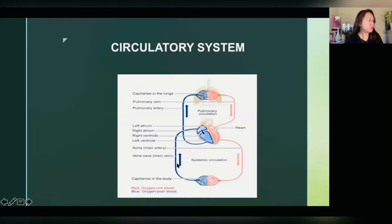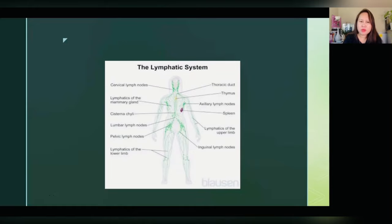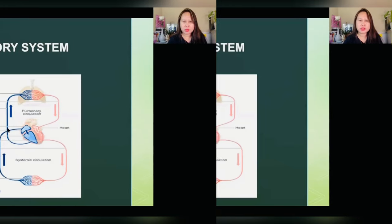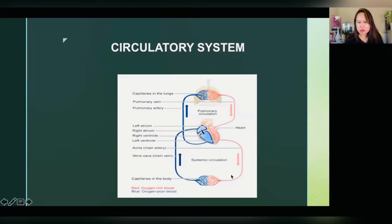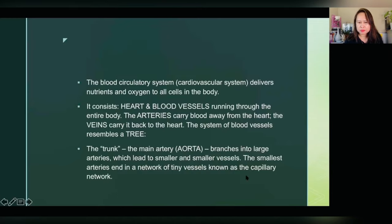We have the lymphatic system, and we also have the circulatory system. The lymphatic system is an offshoot of our venous system, which is part of the circulatory system. In this picture, the red-colored vessels are the arteries — oxygen-rich blood — and the blue is the oxygen-poor blood, which is our venous system.